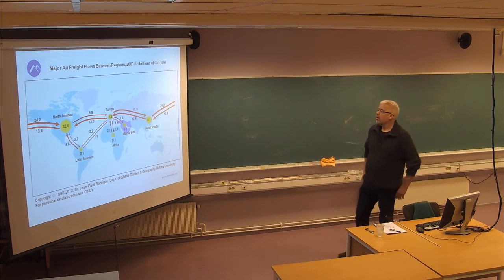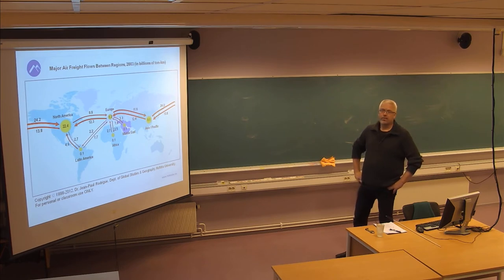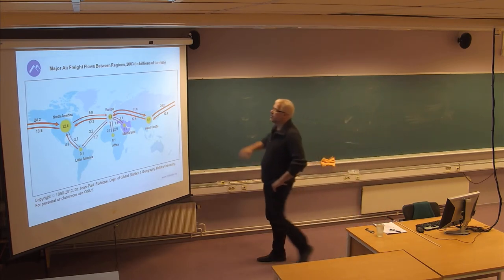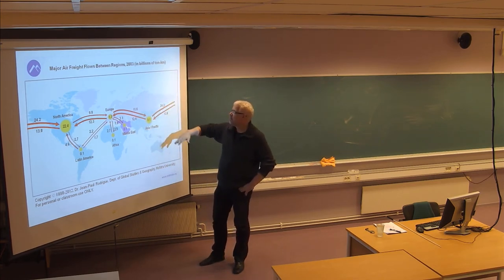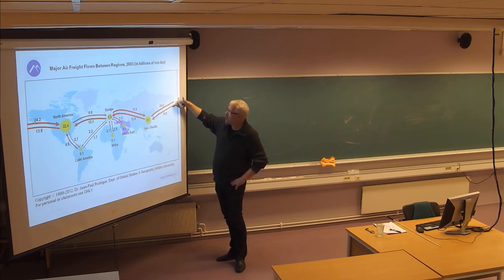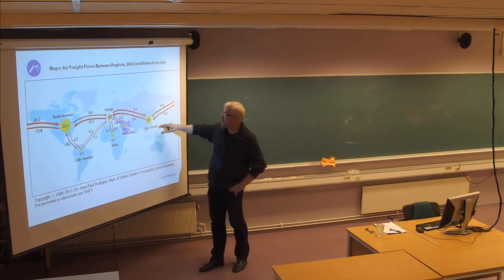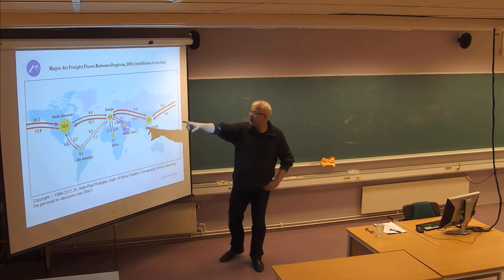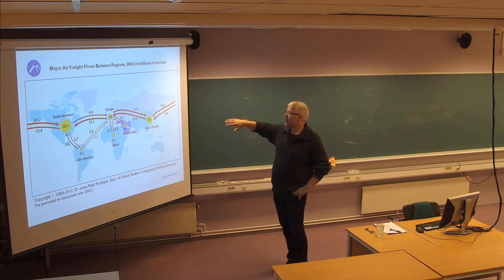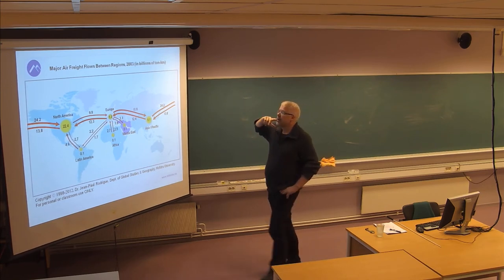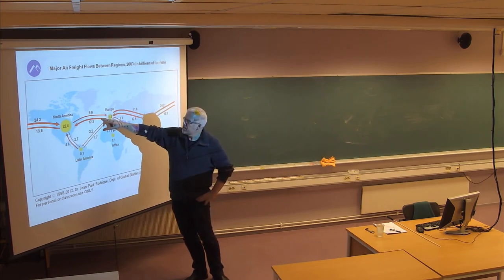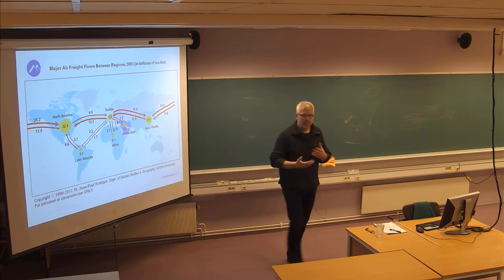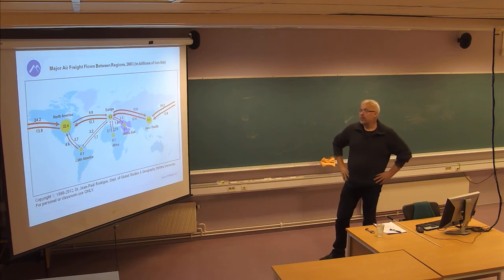Major cargo flows come from Asia-Pacific as one main center, Europe, and North America, which attracts quite a lot of cargo measured in ton-kilometers. It is fairly balanced between Europe and Asia-Pacific, but strongly in favor of exports towards North America — meaning North America imports far more air freight than it exports to the Far East. Europe has a slight imbalance in favor of exports to the US.